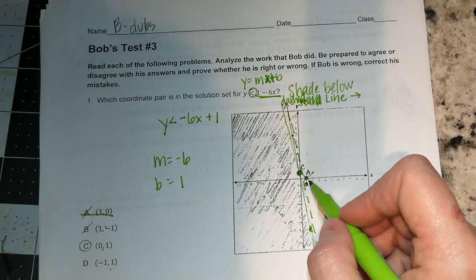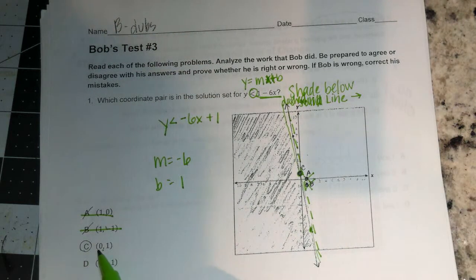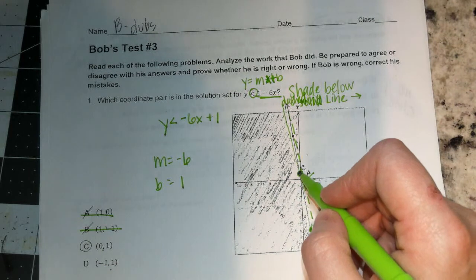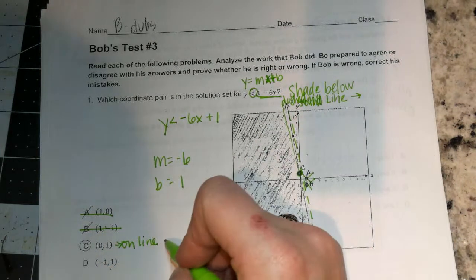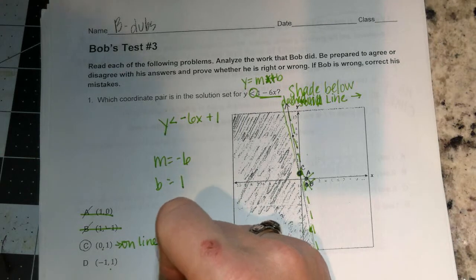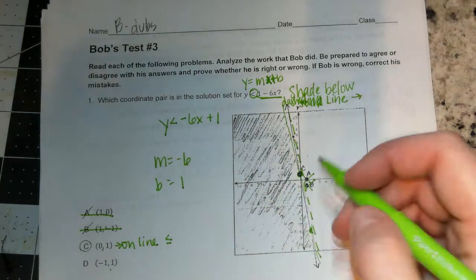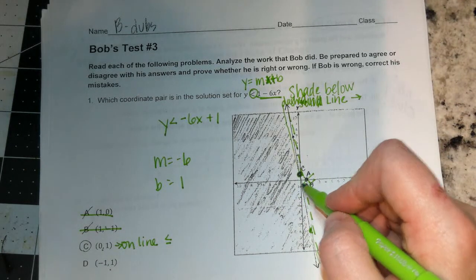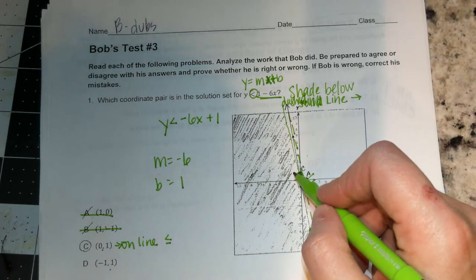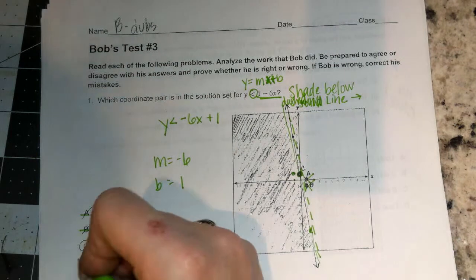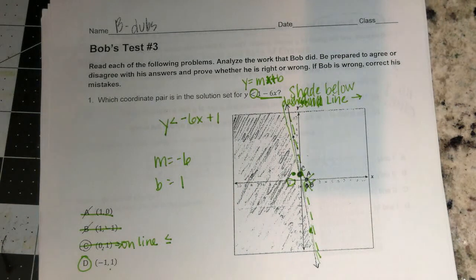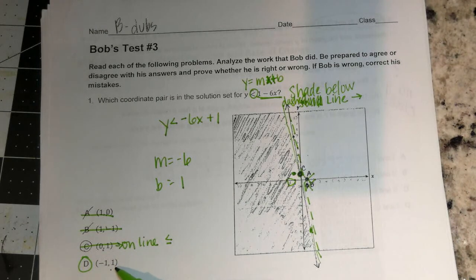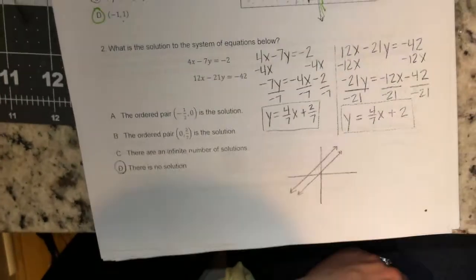So which coordinate pair is a solution set for y is less than 1 minus 6x? So that's the correct line. It should be dashed. We need to figure out which one of these is in that zone, that would be a solution set. So 1, 0 is A. It's not in there, so it's not A. B is not in there, so that's not right. C, 0, 1, that's right on that line. It's on the line. And notice that it says less than, not less than or equal to, it would have to be less than or equal to to be on the line. I really don't think that's it. Let's try D, negative 1, positive 1. So we're about right here. Actually, this is our best choice. D. So because it's not equal to, it cannot be on the line.